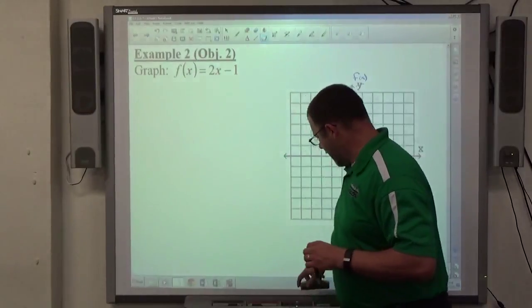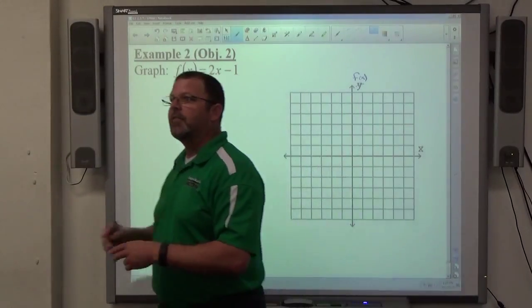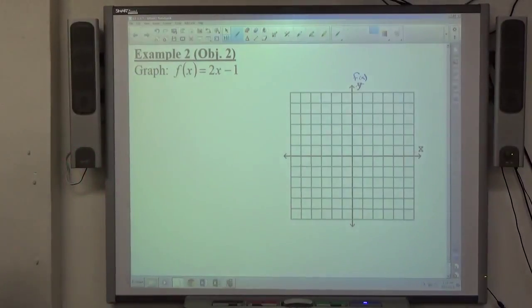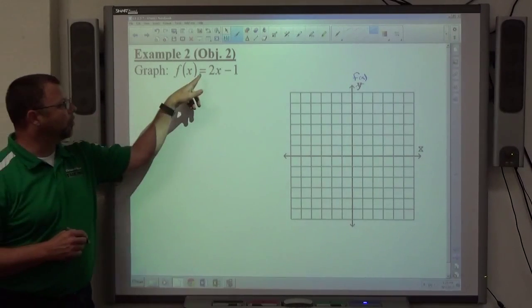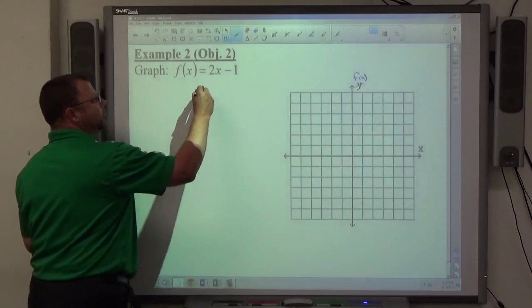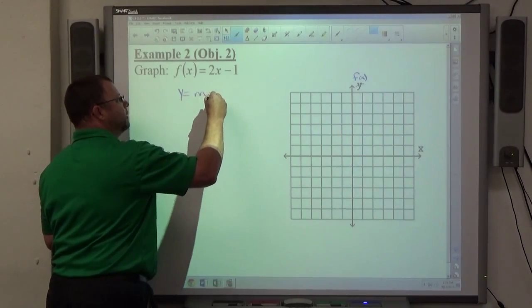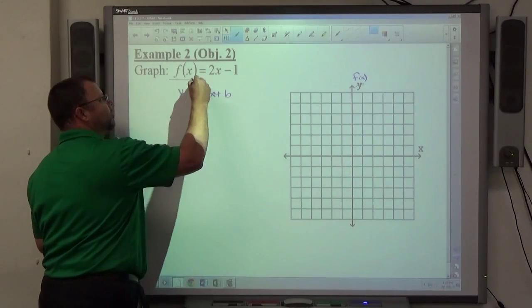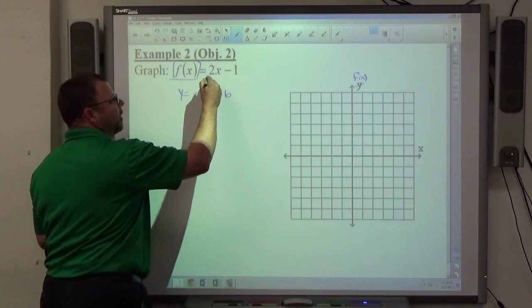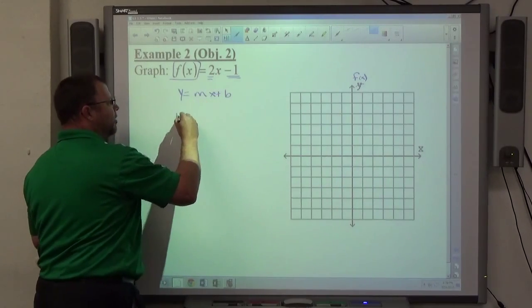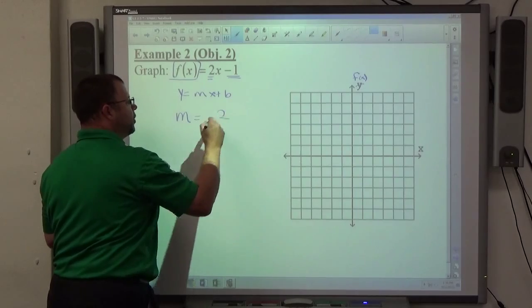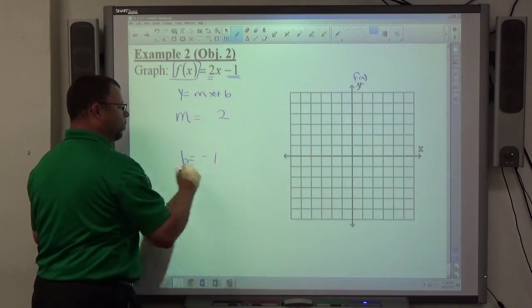Now, if you recall back in algebra 1 when we did slope-intercept method of graphing, all we have to do, if it says y = mx + b, which this already has that structure—there's y, right? There's mx + b. I can see from this problem m is equal to positive 2, b is equal to negative 1.